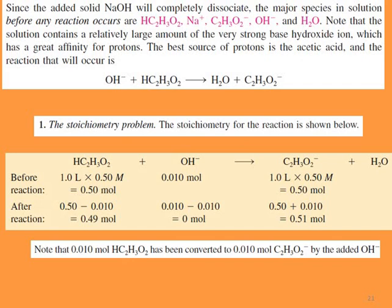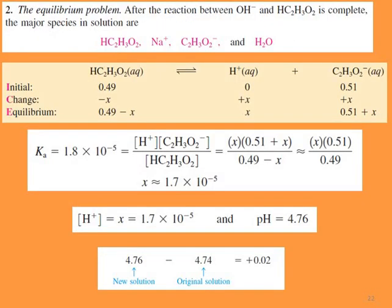After the reaction: acetic acid goes from 0.5 to 0.49 mol (0.5 − 0.01); hydroxide is consumed (becomes 0); acetate becomes 0.51 mol (0.5 + 0.01). So 0.01 mol acetic acid has been converted to 0.01 mol acetate by the added hydroxide.